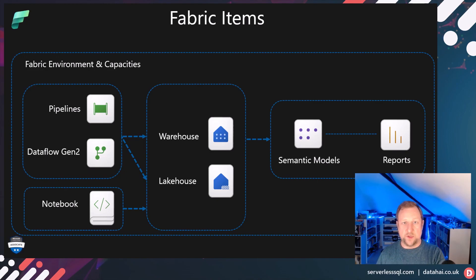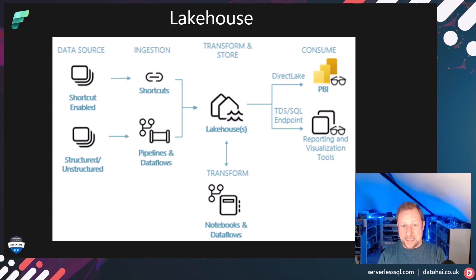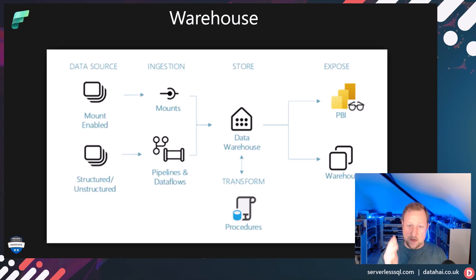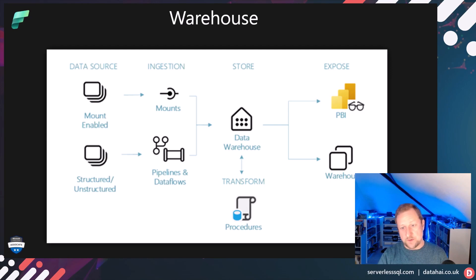End-to-end solution documentation goes a long way to helping you understand how items link together. In the lake house diagram from the official Microsoft documentation, the lake house in the middle gets data from pipelines and data flows, with transformation via notebooks and data flows before consuming in Power BI. The warehouse similarly gets loaded from pipelines and data flows — no notebooks there — but using procedures and SQL, then serving data through Power BI.